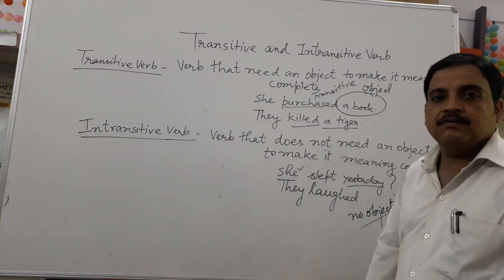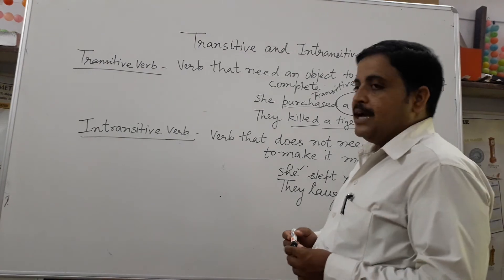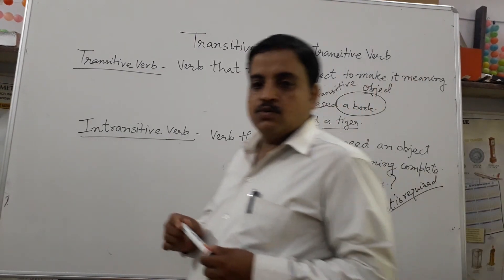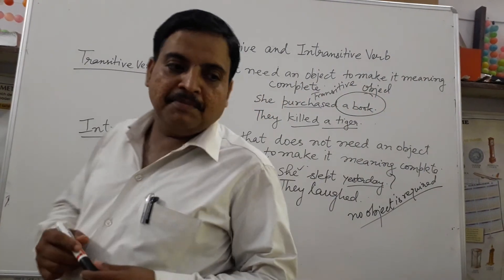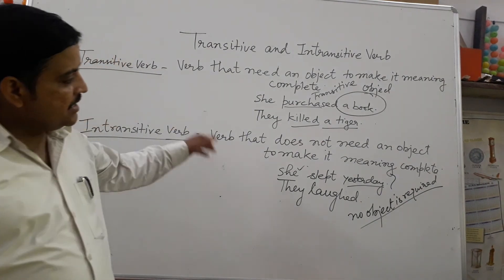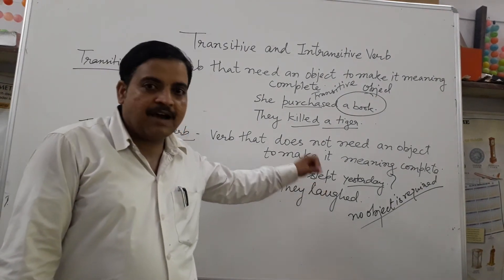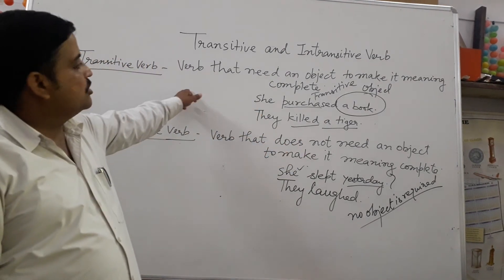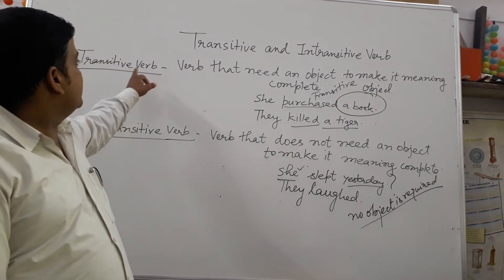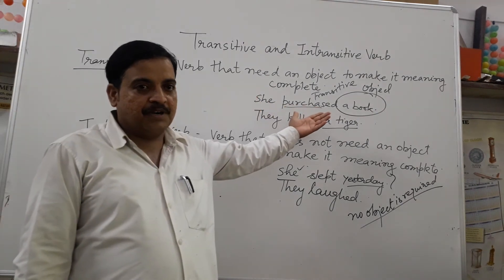So, such verbs are called Intransitive Words — verbs which do not need an object to complete their meaning. Just like you can see here, 'left' — no object is required. And verbs that require an object to make their sense clear are called Transitive Words. Here there is a verb, and an object is required.